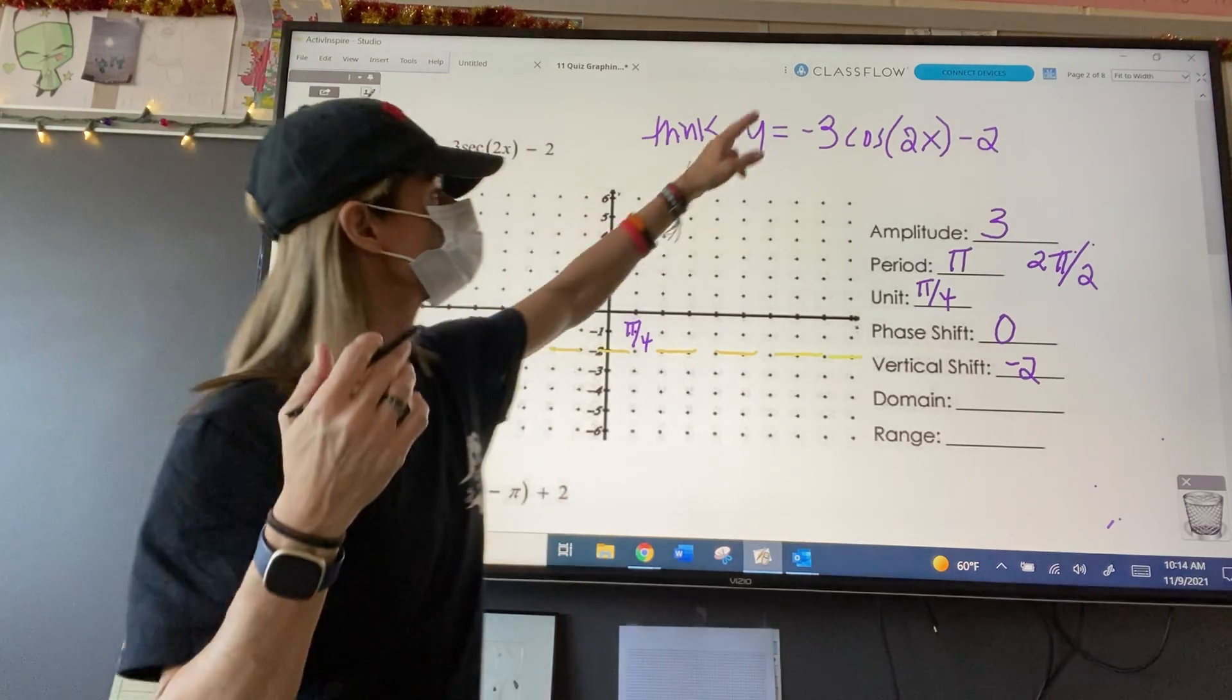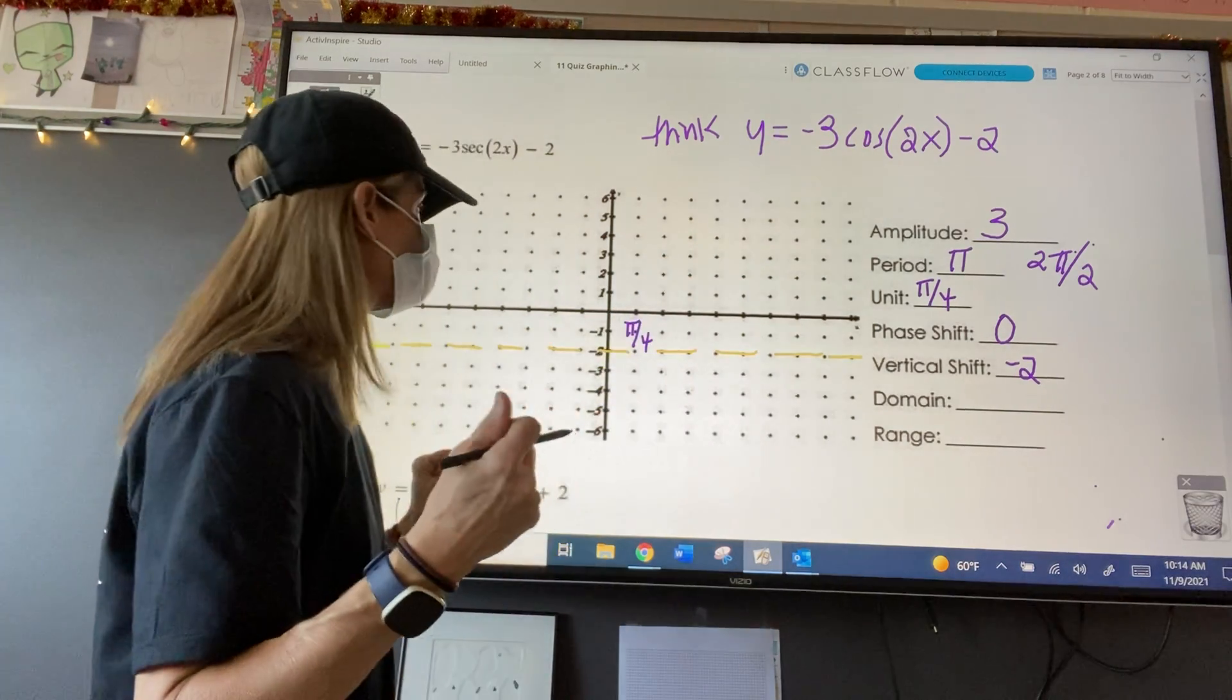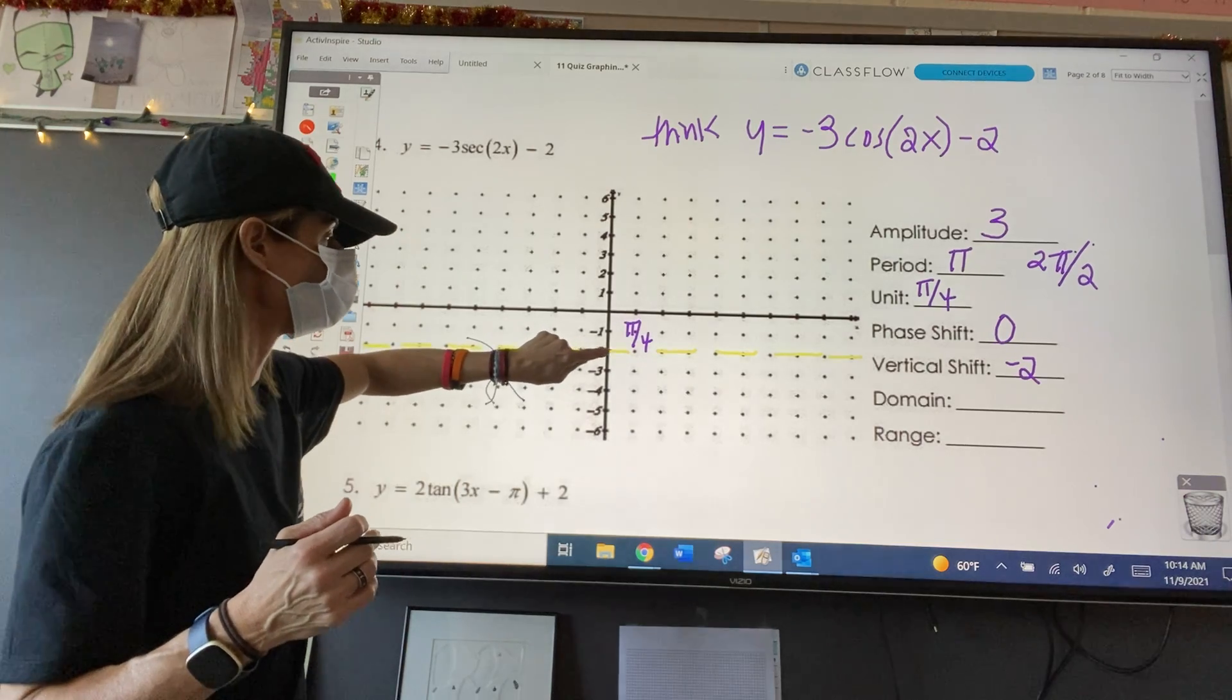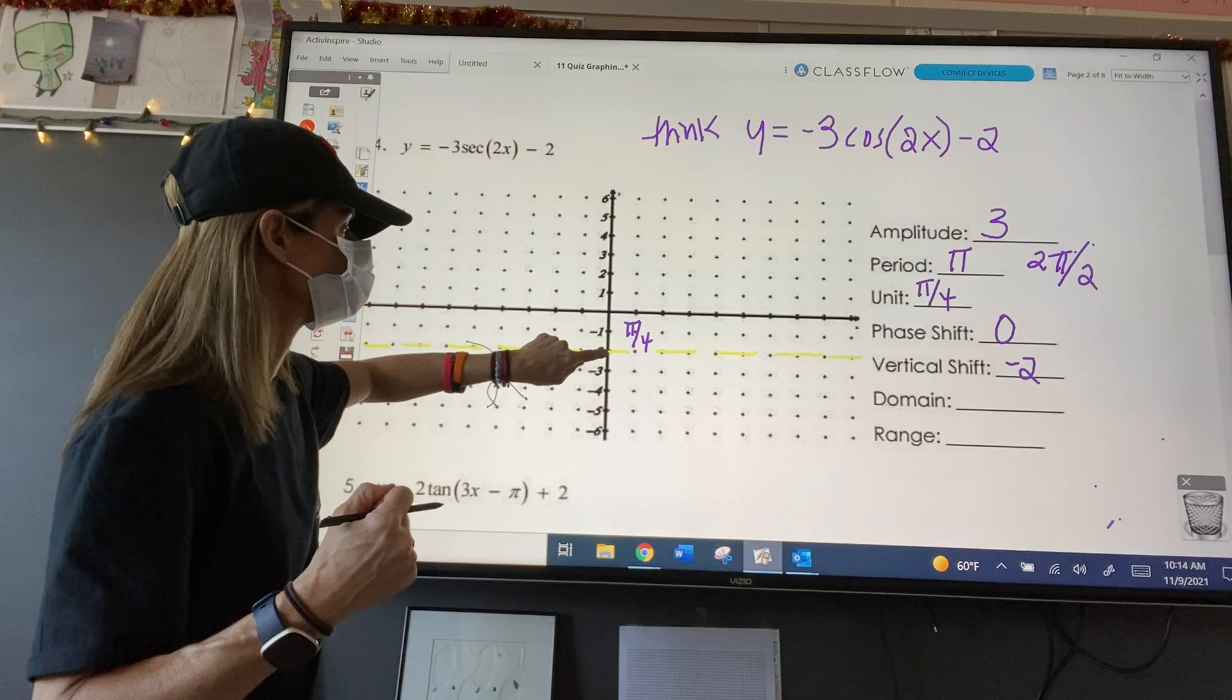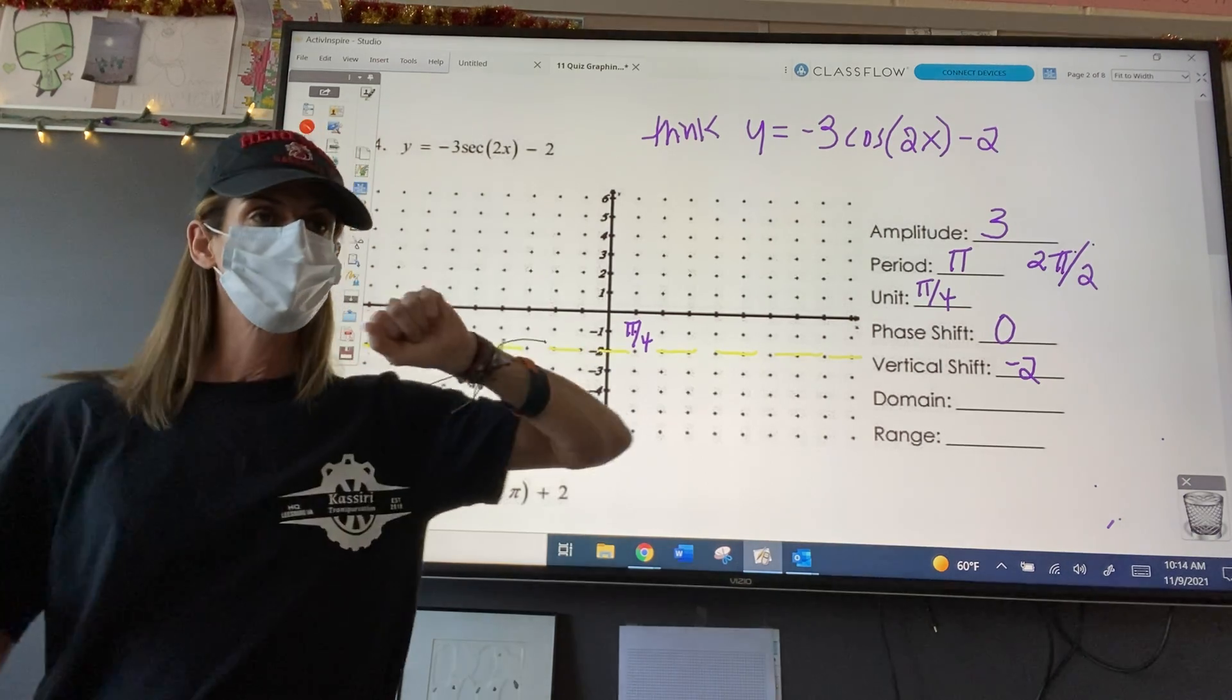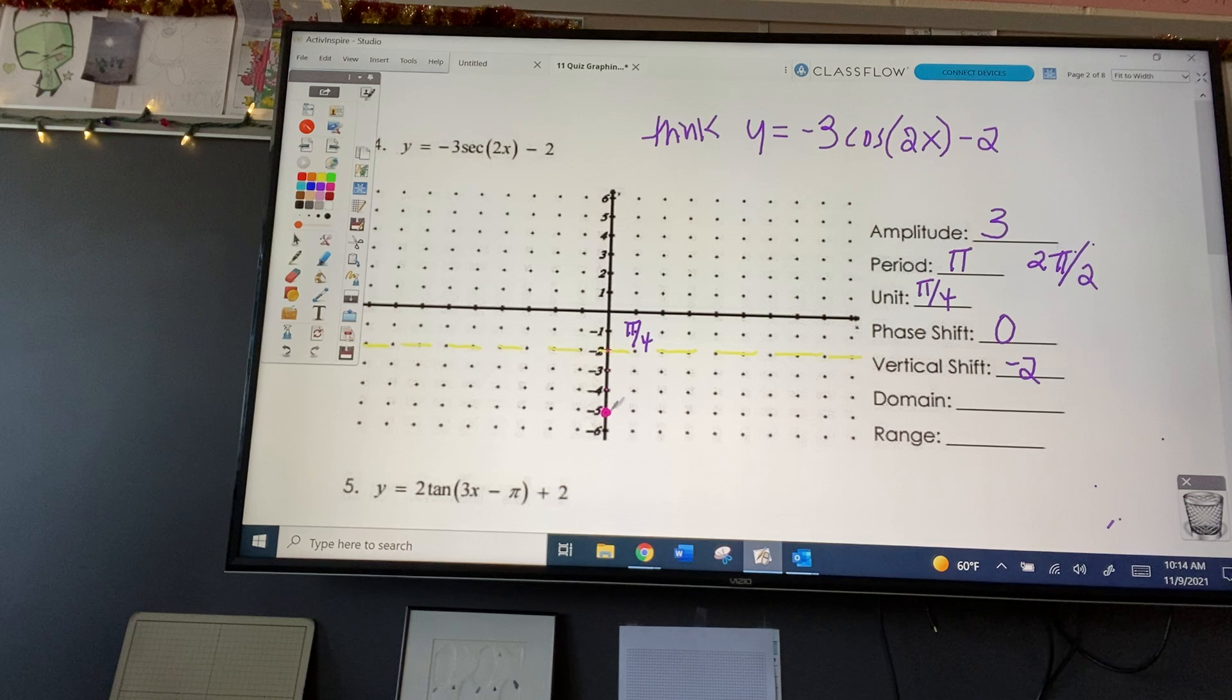In this case, it's negative, and we have a stretch of three, an amplitude of three. So where is our, here's our like zero, zero. That point is not on our graph because we're graphing cosine. So where am I going to start? High, low, low. Because it's negative. Because it's negative. Excellent.